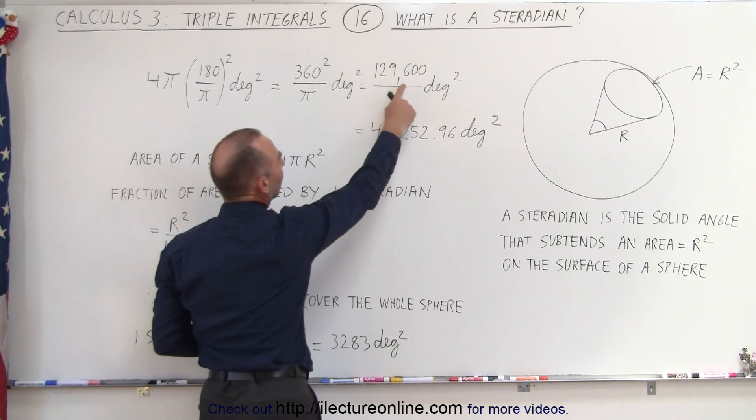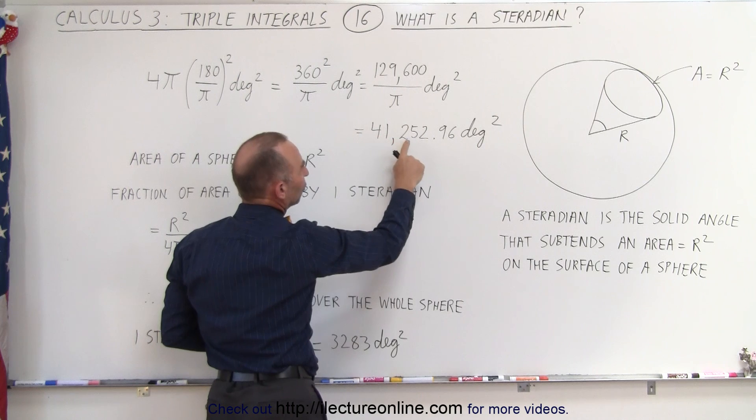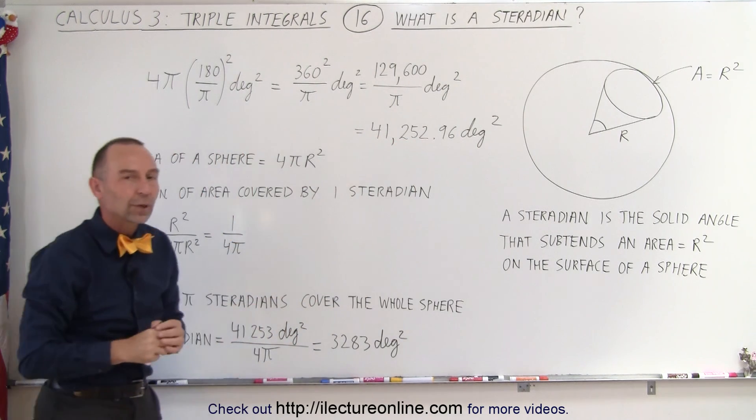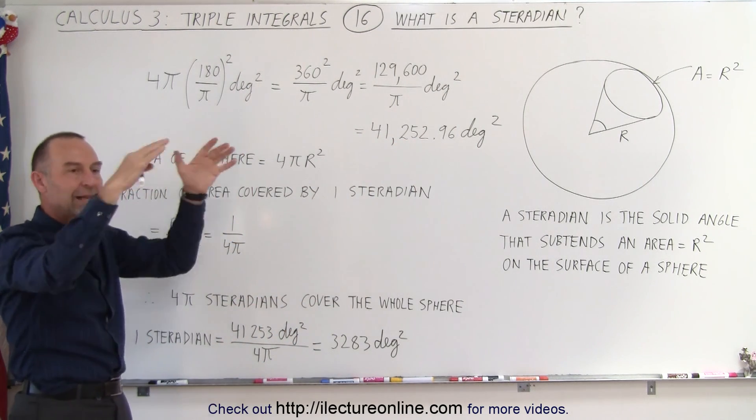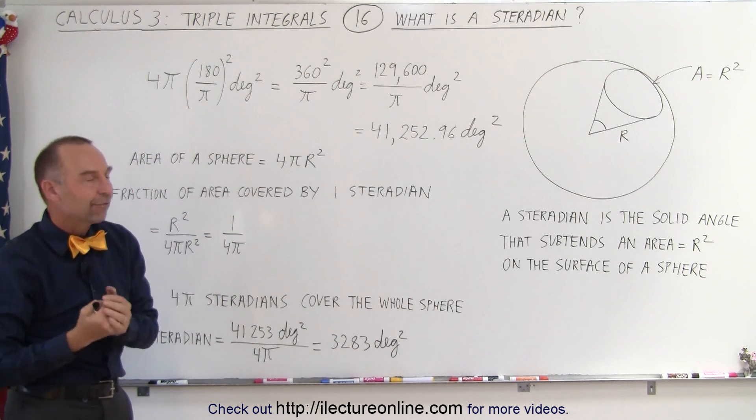we get the number of degrees squared in an entire sphere. That's the same as taking the angle of 360 degrees and squaring it divided by pi, which is equal to 129,600 divided by pi, which is equal to 41,253, essentially, square degrees.